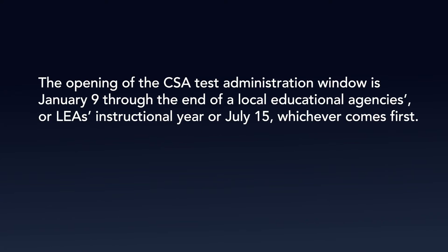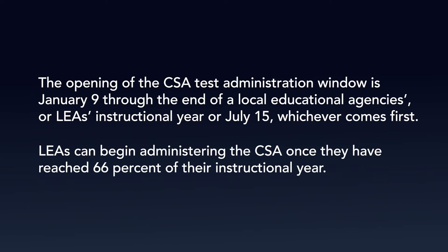The opening of the CSA test administration window is January 9, through the end of a local educational agency's, or LEA's, instructional year, or July 15, whichever comes first. LEAs can begin administering the CSA once they have reached 66% of their instructional year.